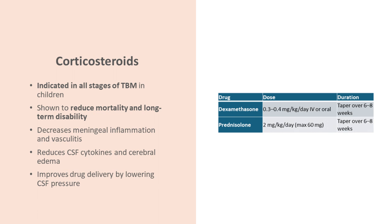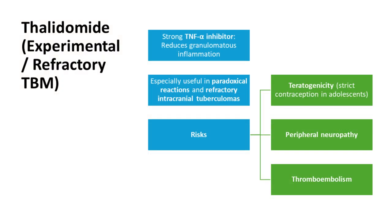We typically start with IV dexamethasone 0.15 mg/kg/dose every six hours for five days, then shift to oral steroids — usually prednisolone or oral dexamethasone — at full dose for one month, then taper over the next four to eight weeks. In patients with persistent tuberculomas or paradoxical reactions who develop steroid side effects such as cataracts or hypertension, TNF-alpha inhibitors like thalidomide may be used. Be very careful with thalidomide in adolescent females due to its teratogenic potential, which can cause limb hypoplasia in the fetus.